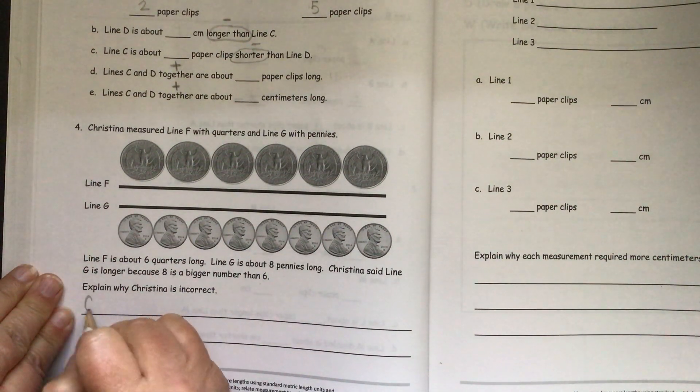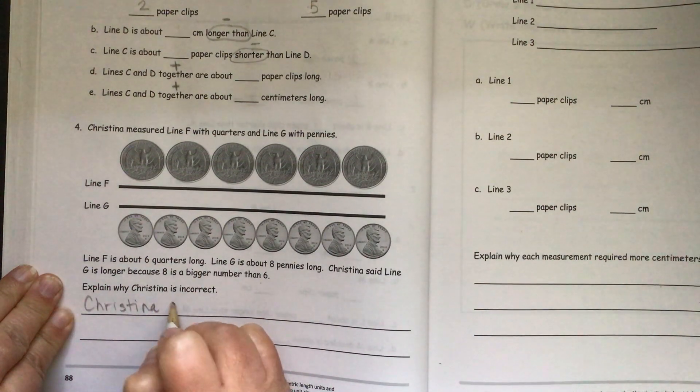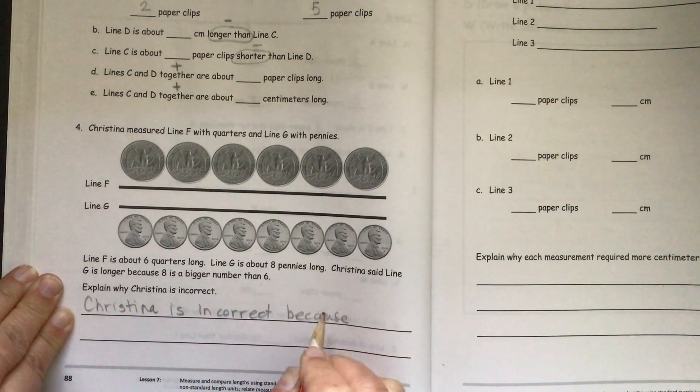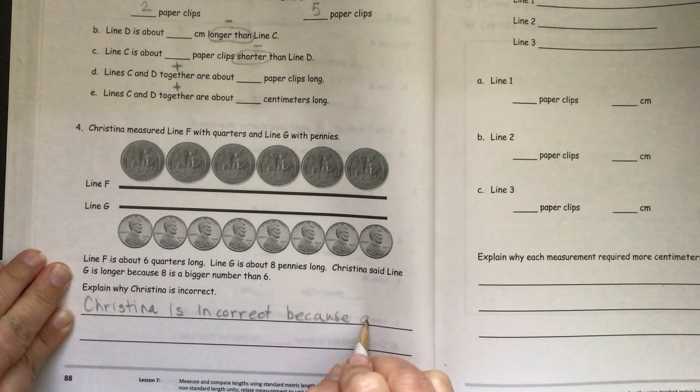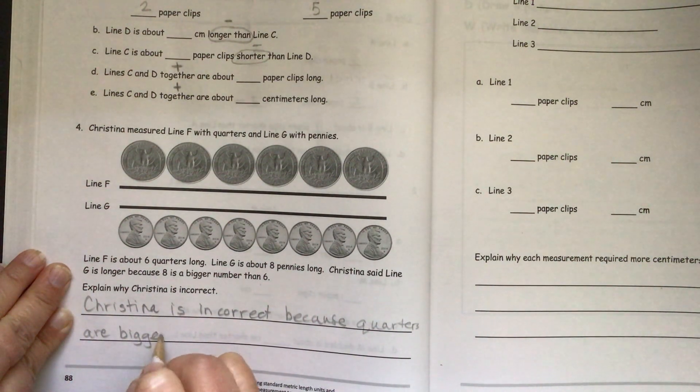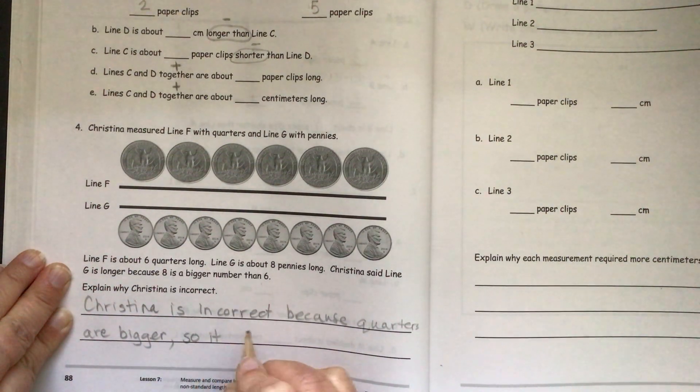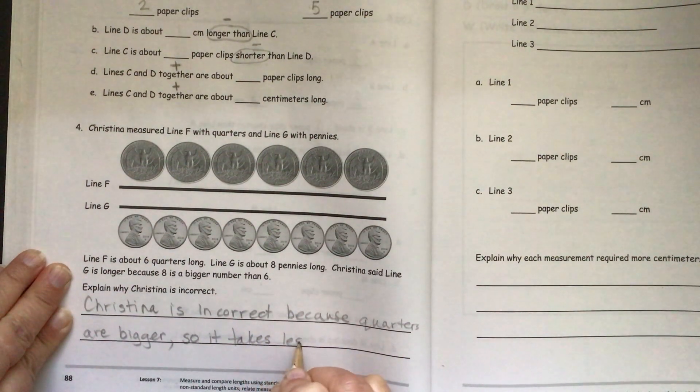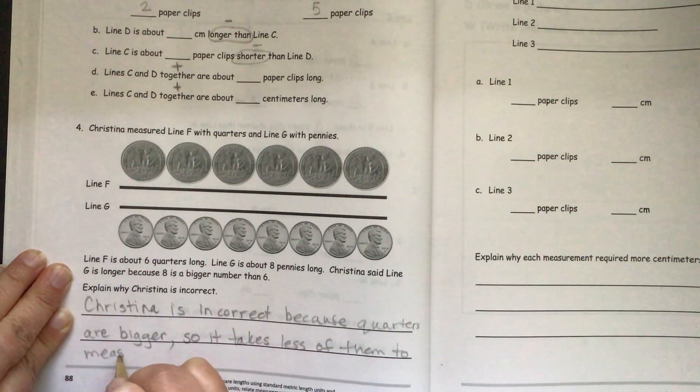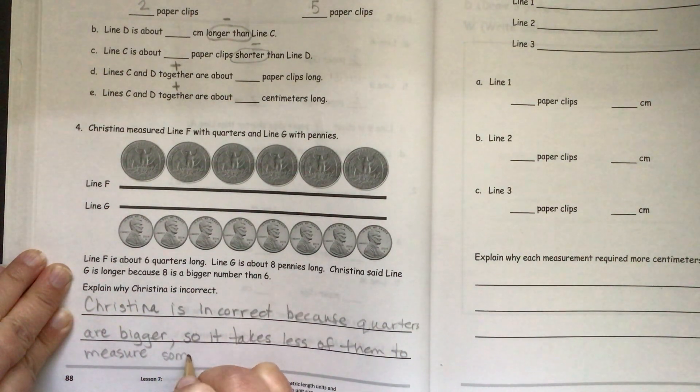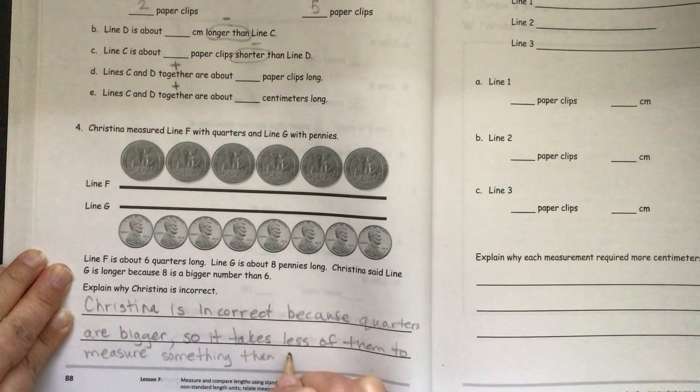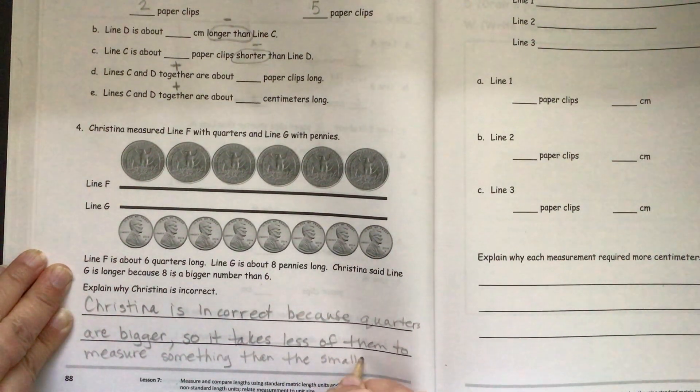So we can say Christina is incorrect because quarters are bigger. So it takes less of them to measure something than the smaller pennies.